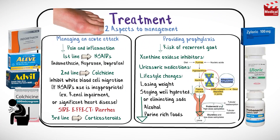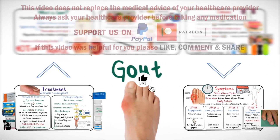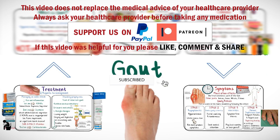The two management options are: firstly, managing an acute attack and decreasing pain and inflammation using non-steroidal anti-inflammatory medications such as indomethacin, naproxen, or ibuprofen, or colchicine as a second-line option, or corticosteroids; and secondly, providing prophylaxis to reduce the risk of recurrent gout using xanthine oxidase inhibitors such as allopurinol and febuxostat, or uricosuric medications such as probenecid. We also discussed important lifestyle changes that can help reduce the risk of developing gout. Subscribe and click the bell button to be notified of upcoming videos.